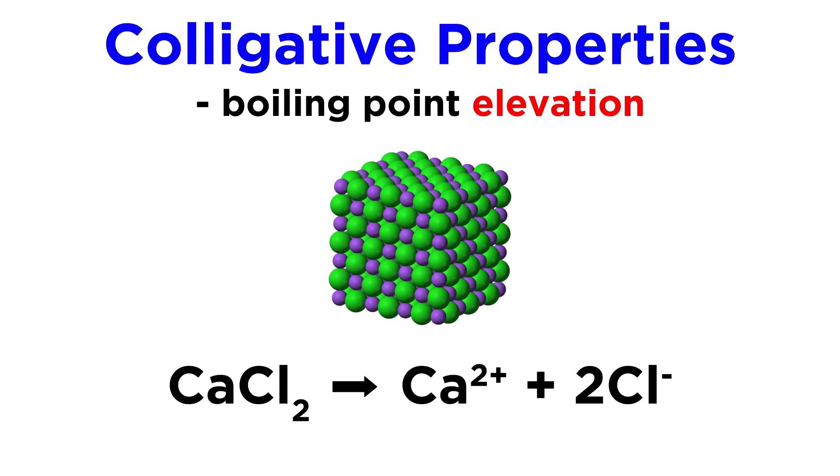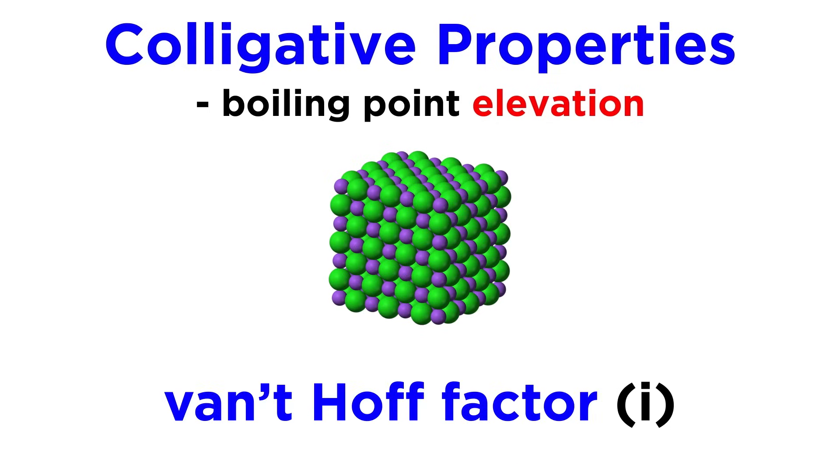But with calcium chloride, there are three ions that result upon dissociation, so one molar in the solid really means three molar in solute. This is accounted for by the Van't Hoff factor, represented by the letter i.